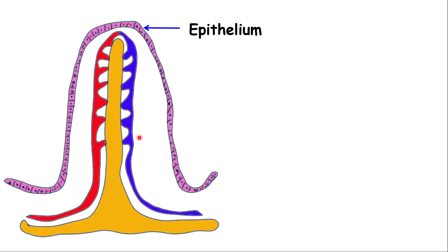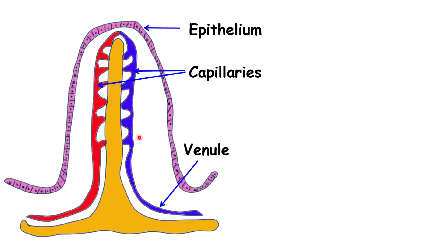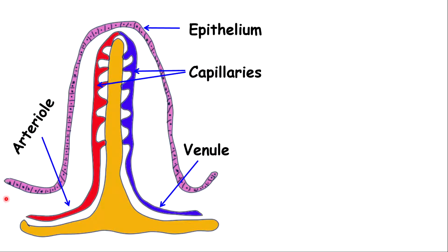Within the villus, you will have a network of capillaries. At one end of the capillary, you have the venule, which is connected to the hepatic portal vein — a very important vein we'll discuss shortly. The other end of the capillary is the arteriole, which connects to an artery. In the innermost part of the villus, you have the lacteal, which is very important in absorbing fatty acids. The capillaries are very important in absorbing amino acids and glucose.